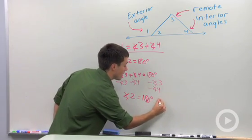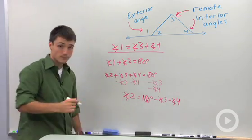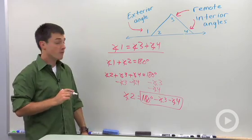So 180 degrees minus angle three minus angle four. So I know angle two in terms of angle three and four, and I'm going to substitute that in right over there.